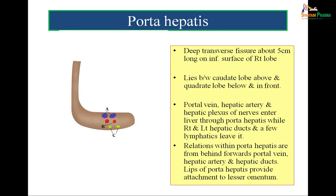Porta hepatis is a deep transverse fissure about 5 cm long on the inferior surface of the right lobe of liver. It lies between the quadrate lobe above and the caudate lobe below and behind. The portal vein, hepatic artery and hepatic plexus of nerves enter the liver through porta hepatis, while right and left hepatic ducts and a few lymphatics leave it. Relations within the porta hepatis from behind forwards are: portal vein, hepatic artery and the hepatic ducts. A represents the portal branches of the portal vein, B represents the right and left branches of the hepatic artery, and C depicts the right and left hepatic ducts. The lips of porta hepatis provide attachment to the lesser omentum.